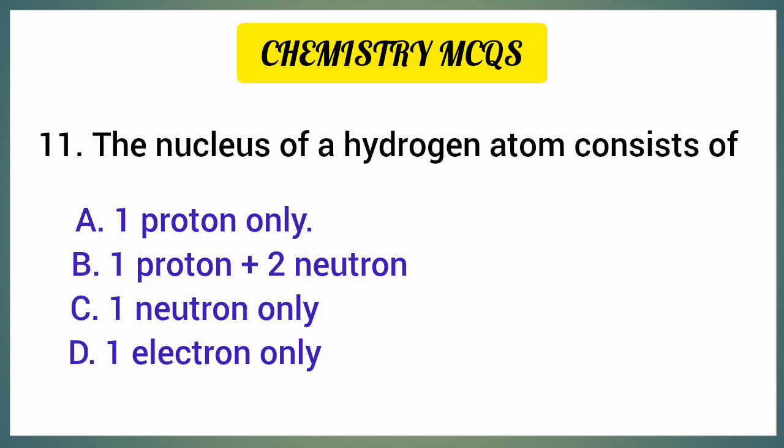The nucleus of a hydrogen atom consists of — correct option is option A: One proton only.